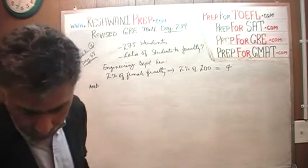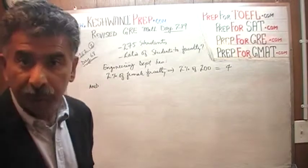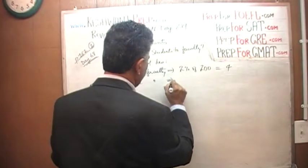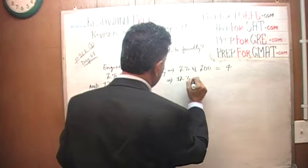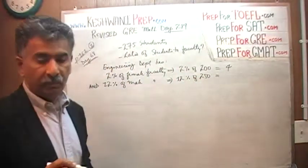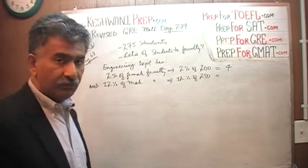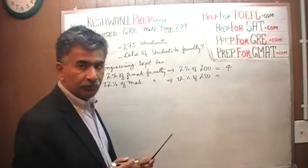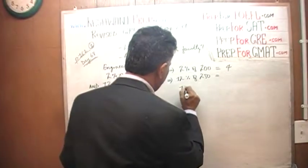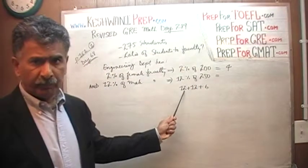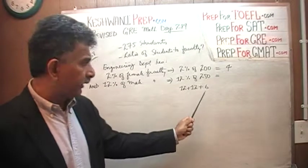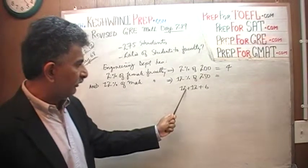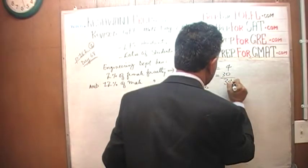Looking at the chart again, in the engineering department we have 12% of male faculty. We need 12% of 250. I'll break it down: 12% of 250 equals 12 plus 12 plus 6 — representing 12% of the first 100, 12% of the second 100, and 12% of 50. That gives us 24 plus 6, which is 30. So there are 4 female plus 30 male, giving us 34 faculty total.